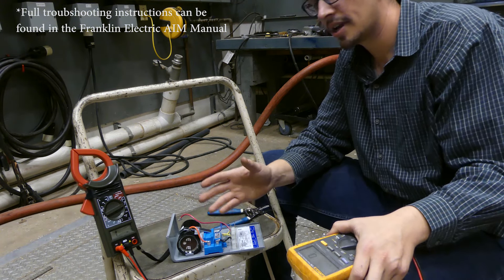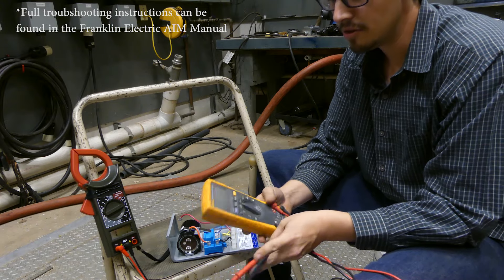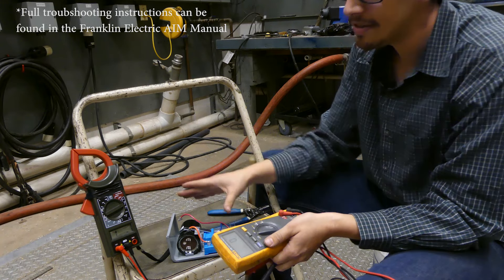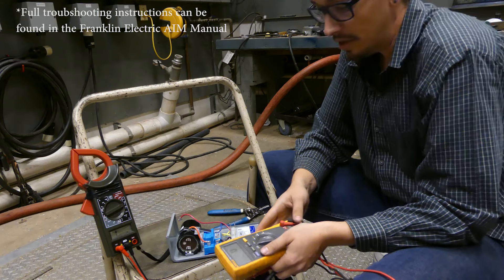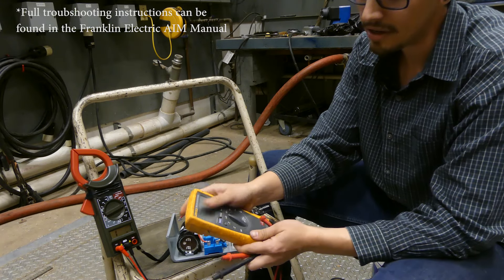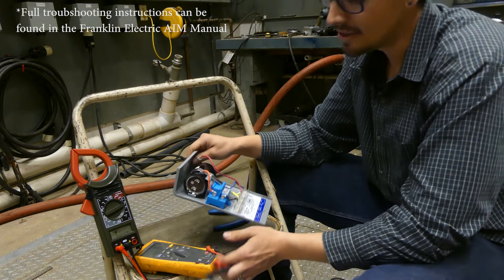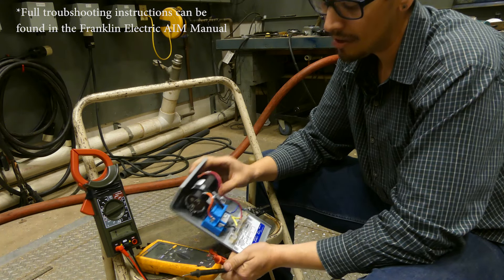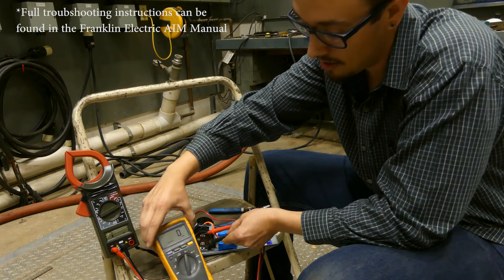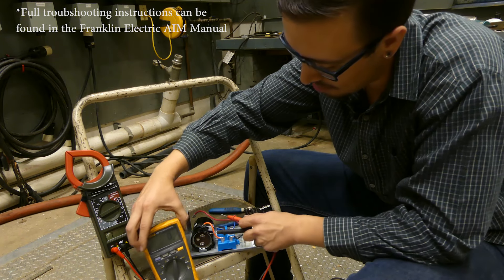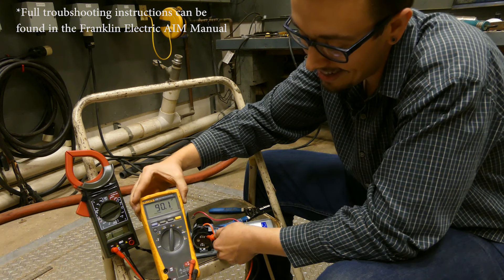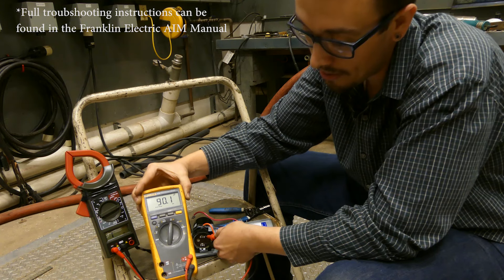One thing I wanted to point out: we've avoided using more expensive meters like Fluke meters just because I wanted to show people on a budget how they can troubleshoot their system. But there is a secondary test you can do that is out of the range of this particular meter—testing the microfarad rating of the capacitor itself. This Fluke meter has the ability to test microfarads. The microfarad rating in this capacitor is written on the side here, between 86 and 103. When we put the meter on at that rating, we're supposed to be between 86 and 103. In an ideal situation, you're somewhere in the middle. I would say we're in pretty good shape.